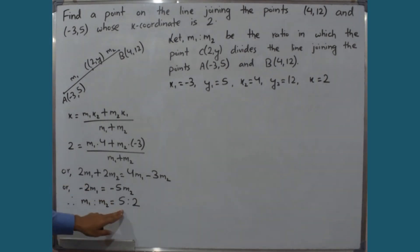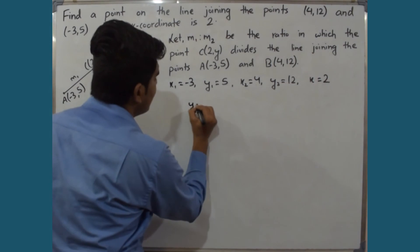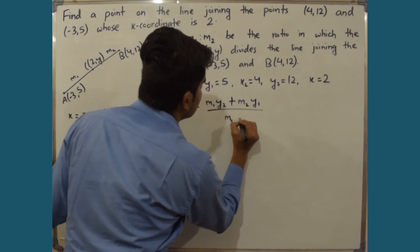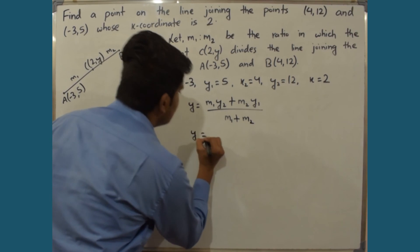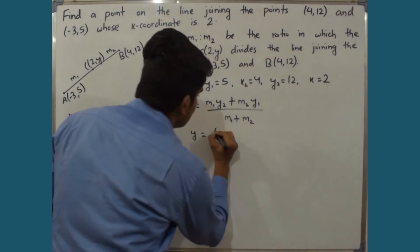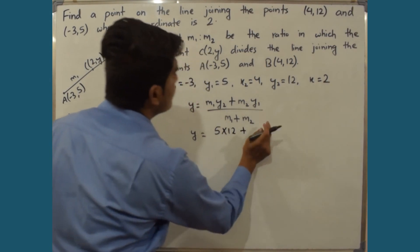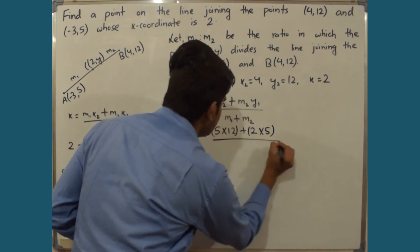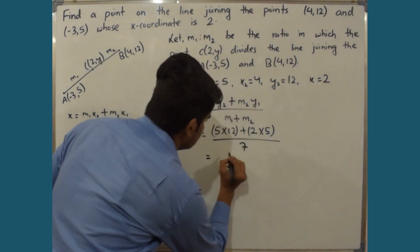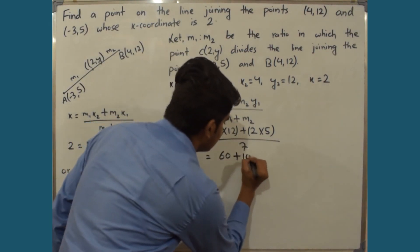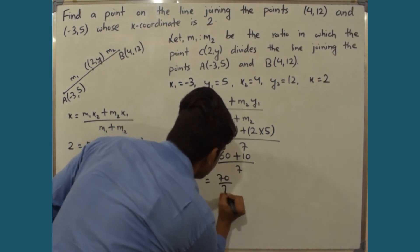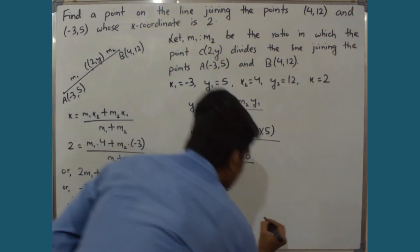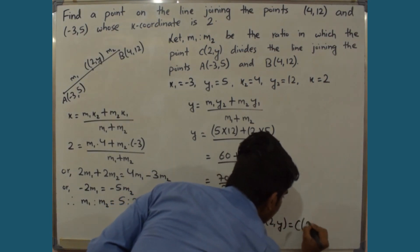Using this ratio to find the y-coordinate: Y = (M1·Y2 + M2·Y1) / (M1 + M2) = (5·12 + 2·5) / (5 + 2) = (60 + 10) / 7 = 70 / 7, therefore Y = 10. So the coordinates of point C are (2, 10).